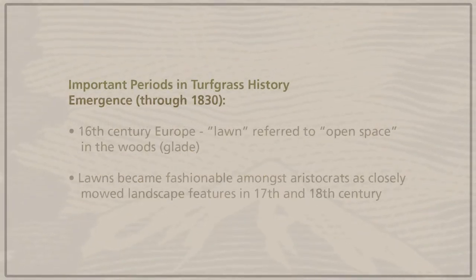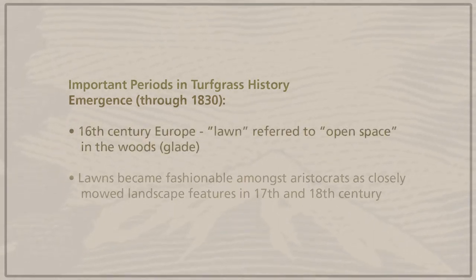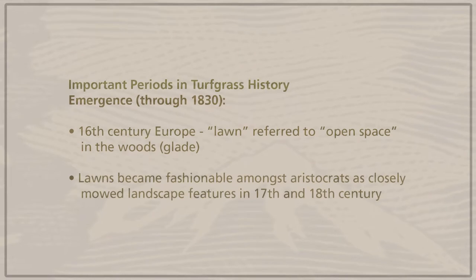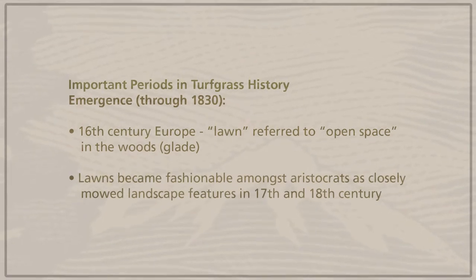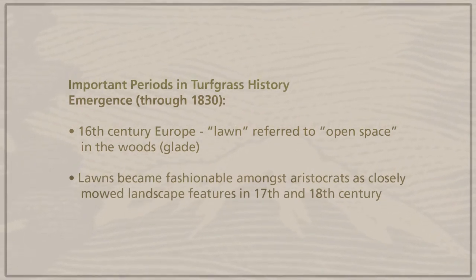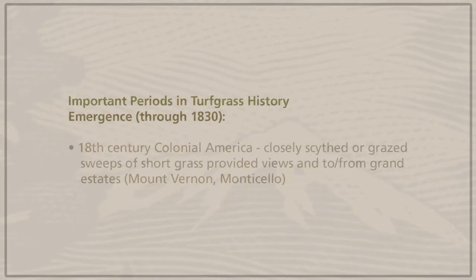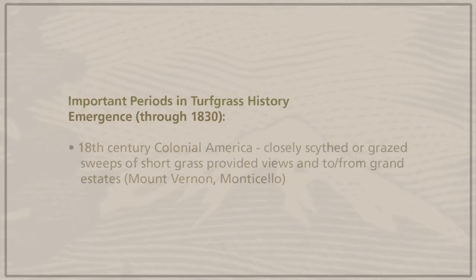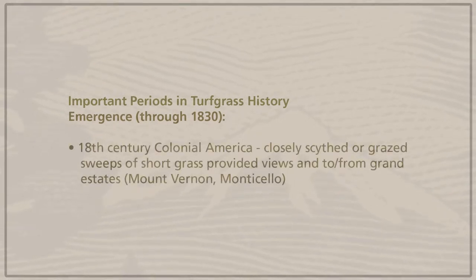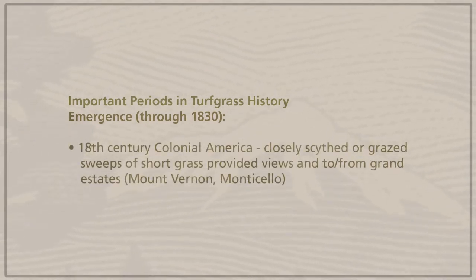In 16th century Europe, lawn referred to open space in the woods. It became fashionable amongst aristocrats as a closely mowed landscape in the 17th and 18th century. And lastly, it was closely scythed or grazed sweeps of short grass that provided views to and from 18th century estates.